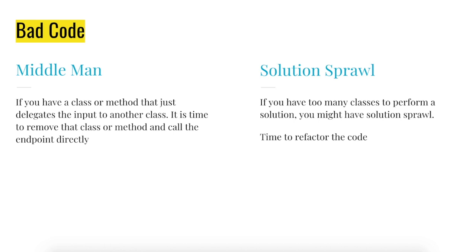Next, let's look at the solution sprawl problem. If you have too many classes to perform a solution, you might have the solution wrong — time to refactor the code. In an ideal case, if you are not able to put together the functionality within three classes, then it is said to be a problem in your structure strategy.